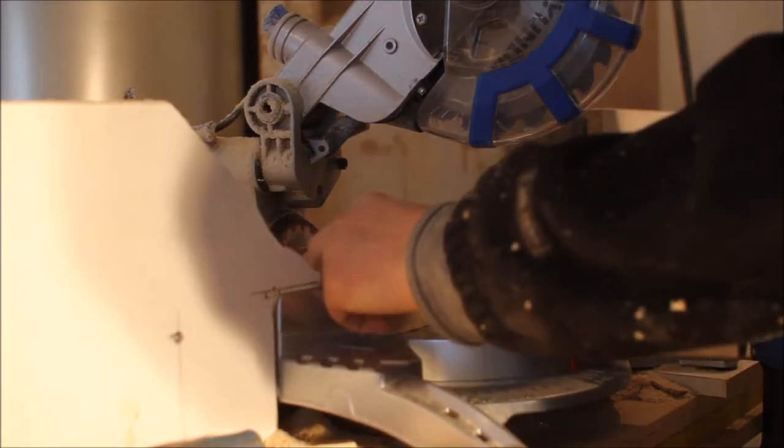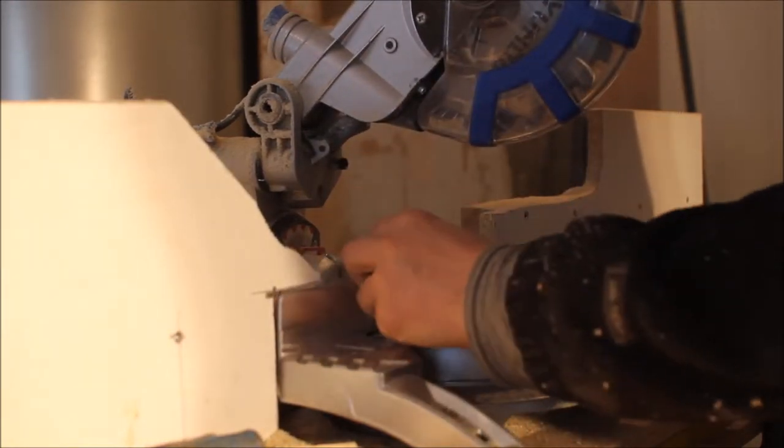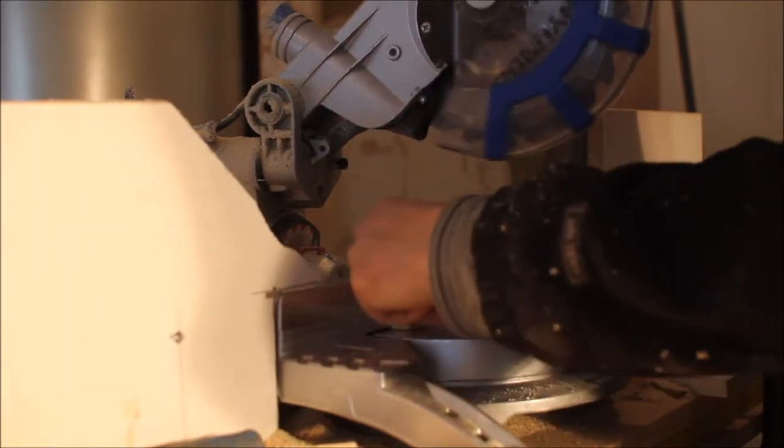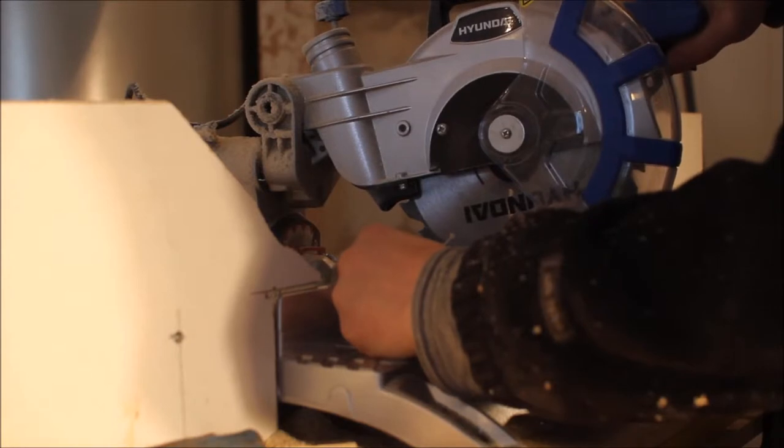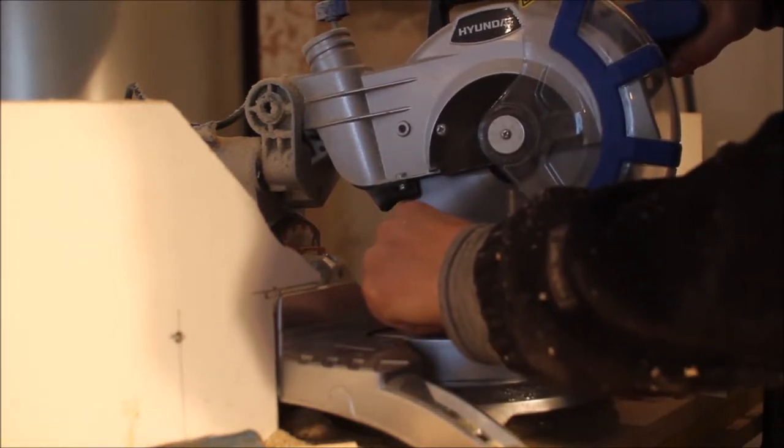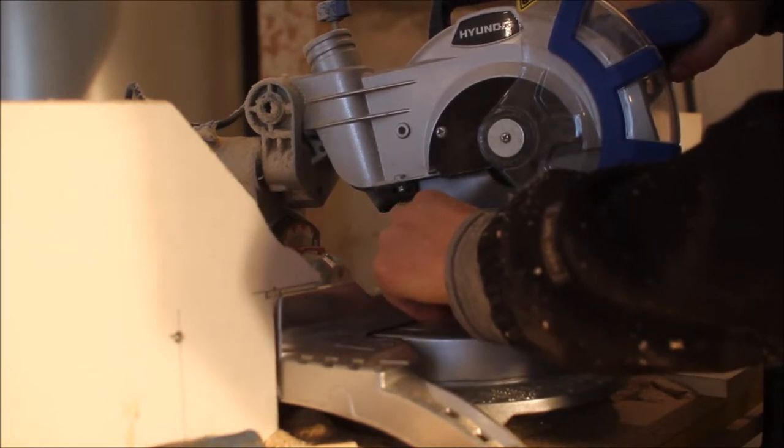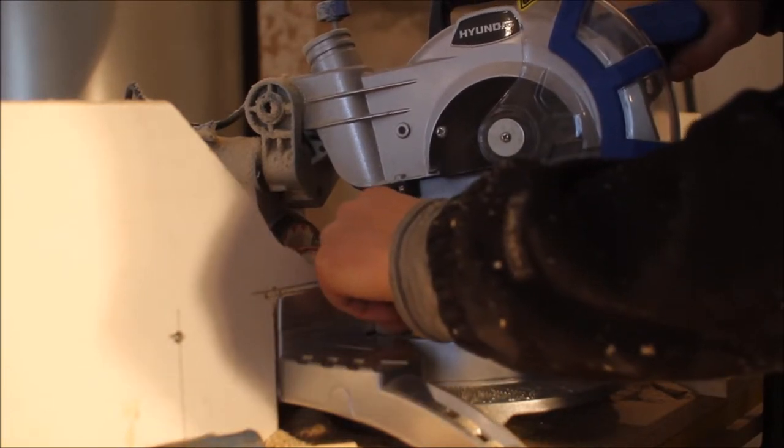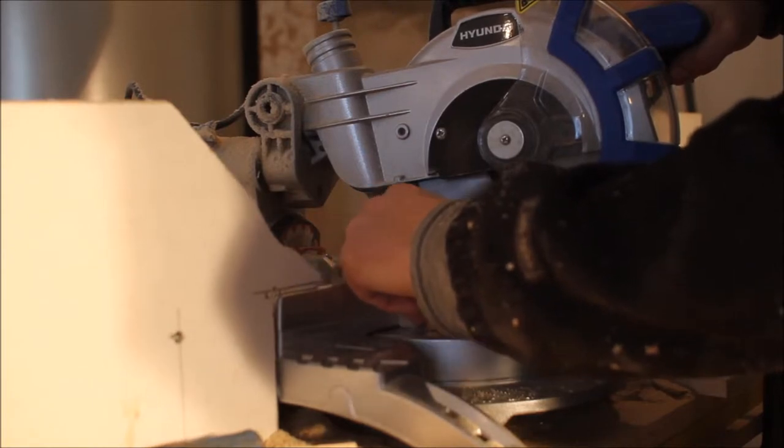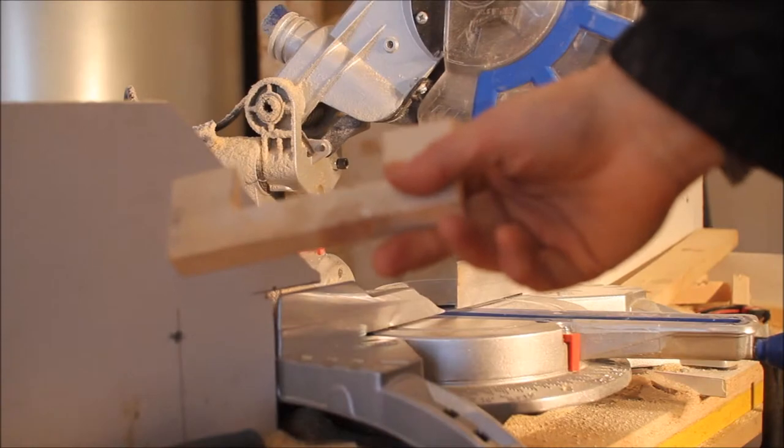Okay, then you put it back under the miter saw and you move the block of wood from left to right. Just move that to the bottom. Okay, there's your slot.